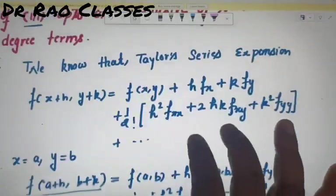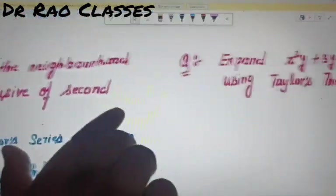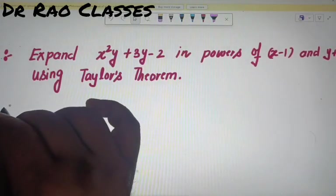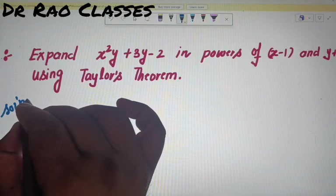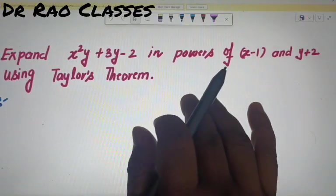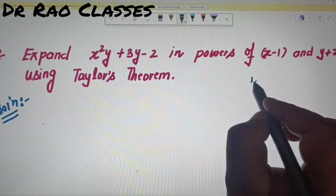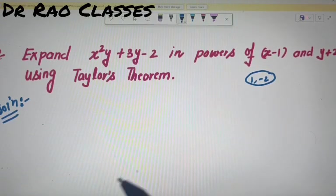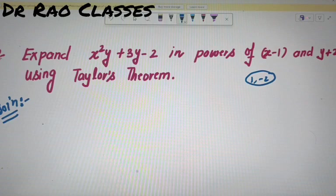अब हम एक और question deal करने वाले हैं। Expand करना है f(x,y) = x²y + 3y - 2 in powers of (x-1) and (y+2), यानि point (1,-2) के neighborhood में expand करना है using Taylor series expansion।